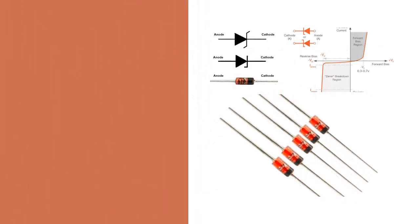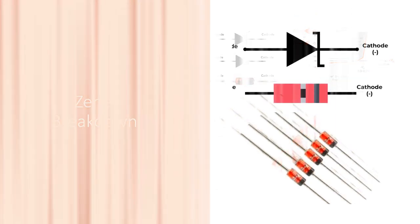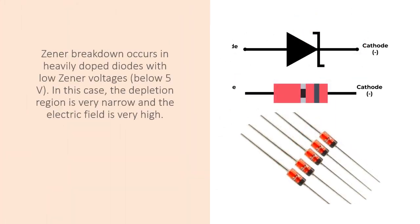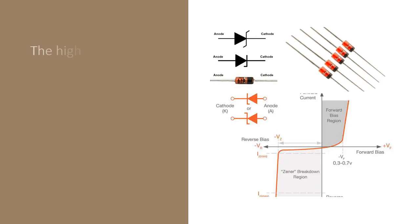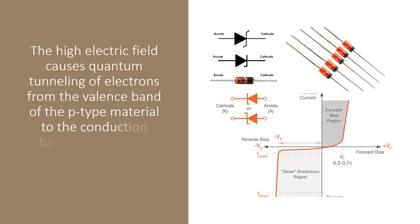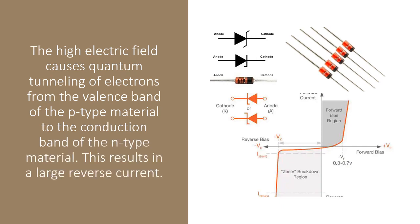Zener breakdown occurs in heavily doped diodes with low Zener voltages, below 5V. In this case, the depletion region is very narrow and the electric field is very high. The high electric field causes quantum tunneling of electrons from the valence band of the P-type material to the conduction band of the N-type material. This results in a large reverse current.